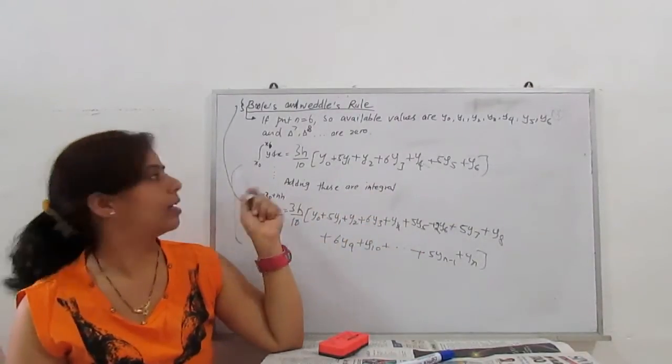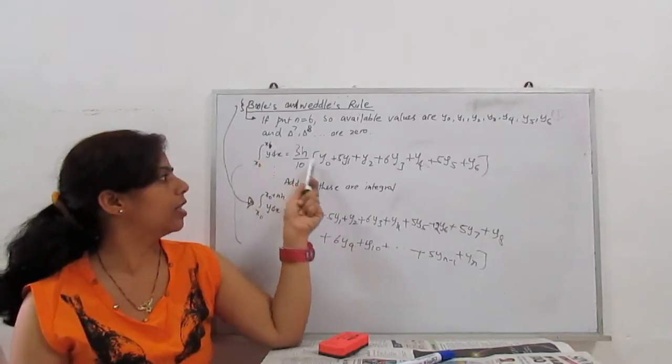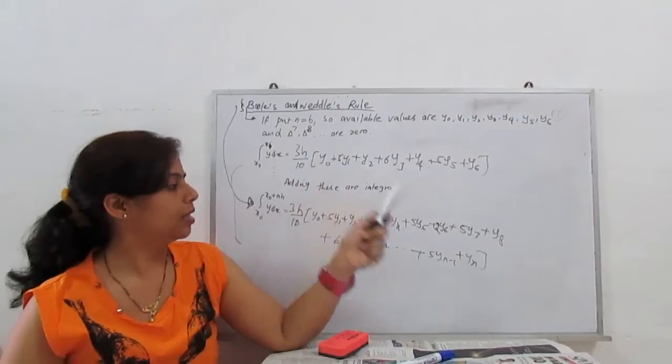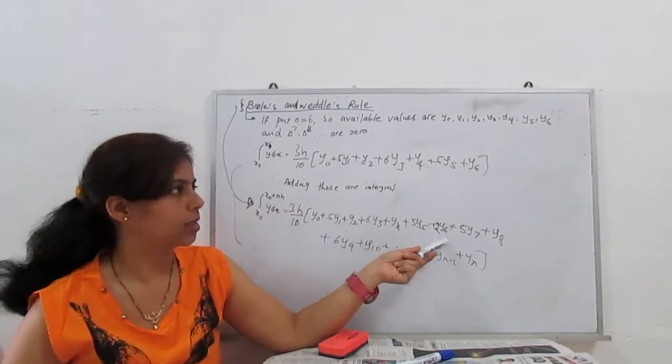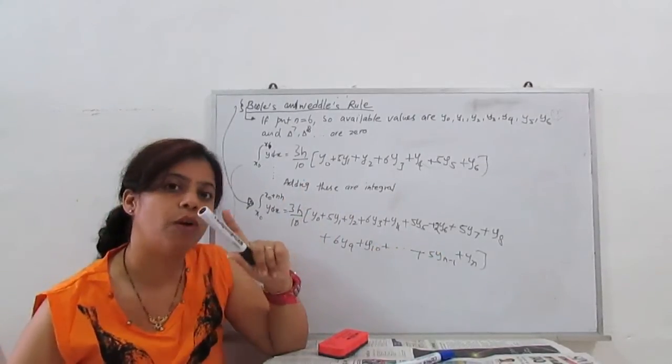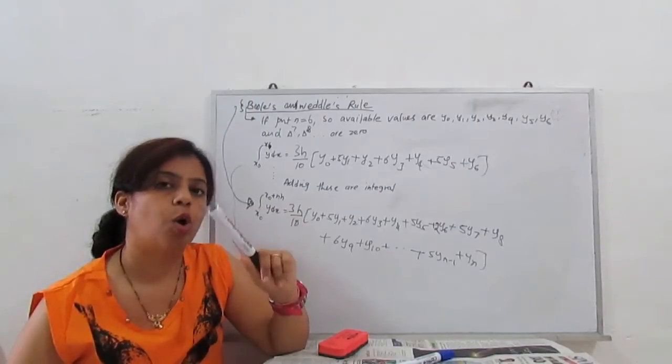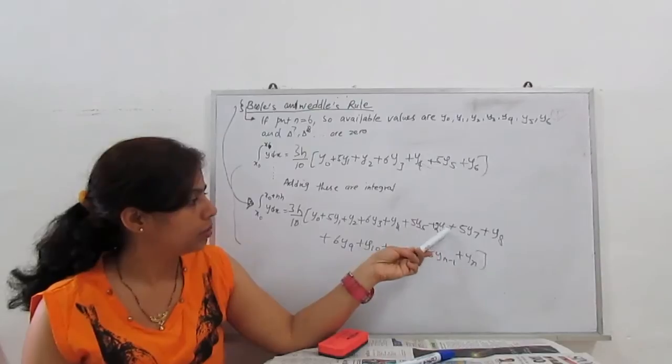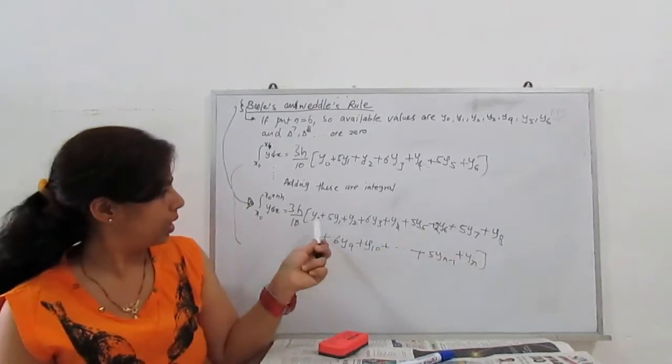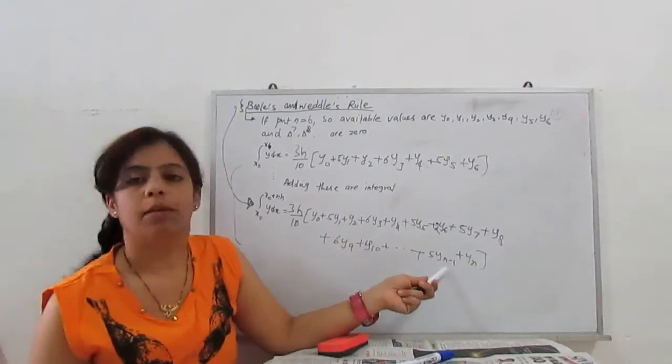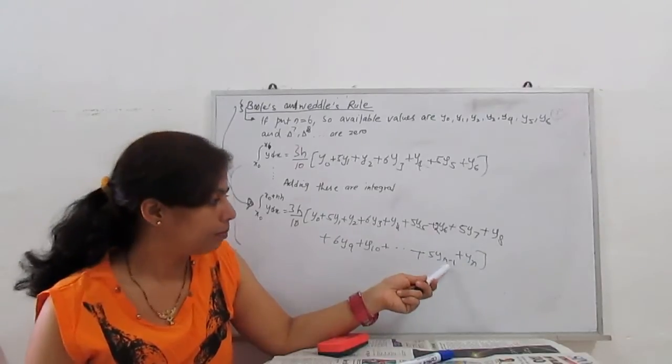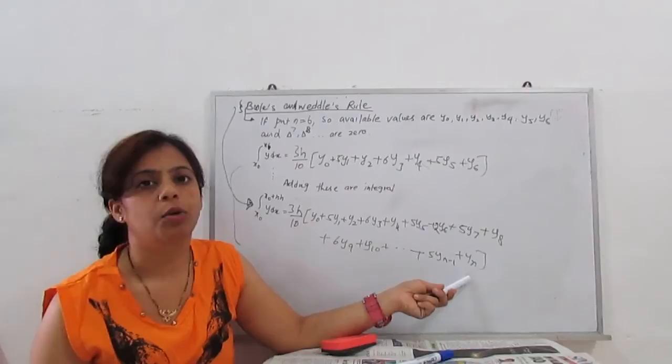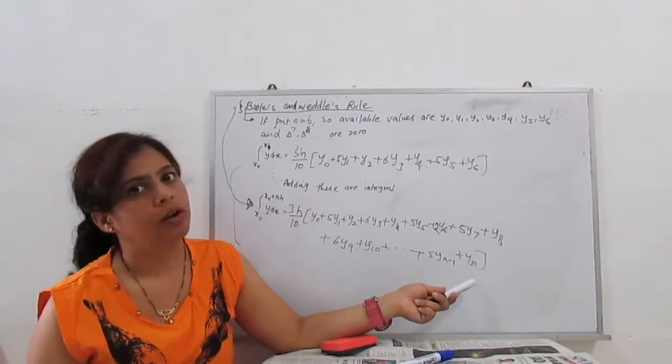Again, at x6 to x12, there is one y6 there. So y6 plus y6 become 2y6. Then repeat the term is y12, y18. So all the repeating term is multiple of 6. So y6 becomes 2 times, then same format. So last term is 5y_{n-1} plus yn. This is our general rule or general formula for Wedel rule.